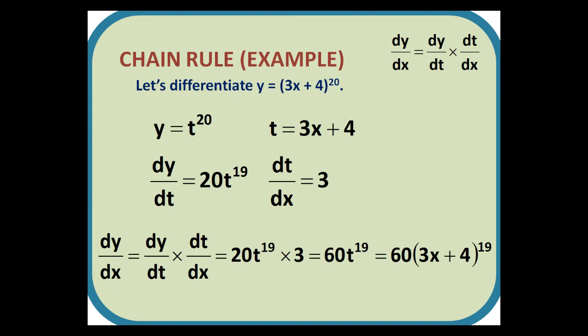Let's differentiate y equals 3x plus 4 to the power of 20, for our example. We can write y equals t to the 20, where t equals 3x plus 4. Then dy by dt is 20t to the 19, and dt by dx is 3. Multiply these together, and we get 60 lots of 3x plus 4 to the 19.